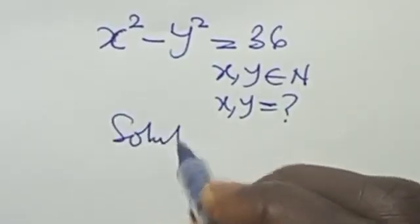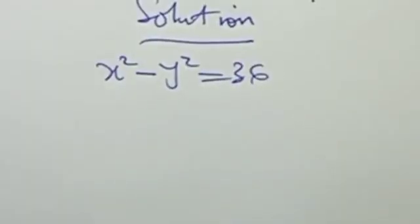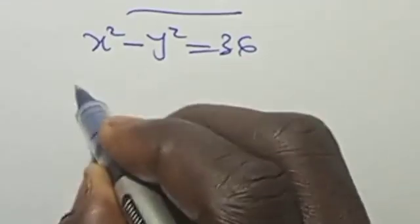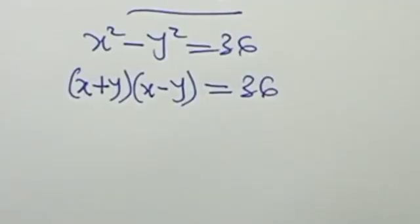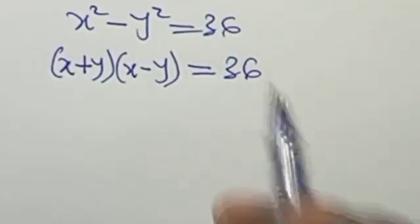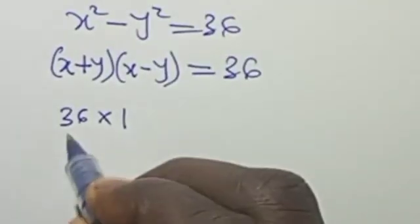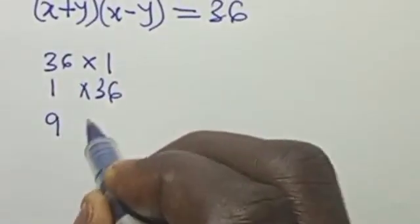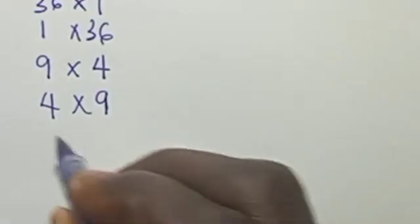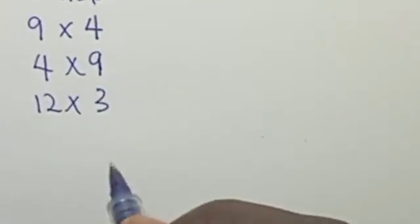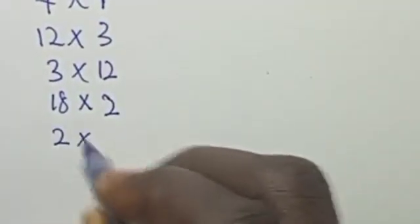If we start by saying solution, we can see that x² - y² = 36. The left hand side is a typical example of the difference of two squares, which can be written as (x+y)(x-y) = 36. And also 36 is a positive number, which means that 36 can be 36×1 or 1×36 or 9×4 or 4×9 or 12×3 or 3×12 or 18×2 or 2×18.